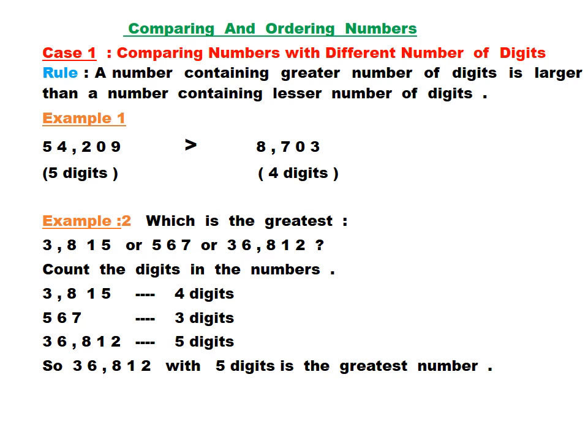Look at example number two. It asks which is the greatest number. We have to look at the number of digits in each number. 3,815 contains 4 digits; 567 contains 3 digits; 36,812 contains 5 digits. So according to the rule, 36,812 is the greatest number.